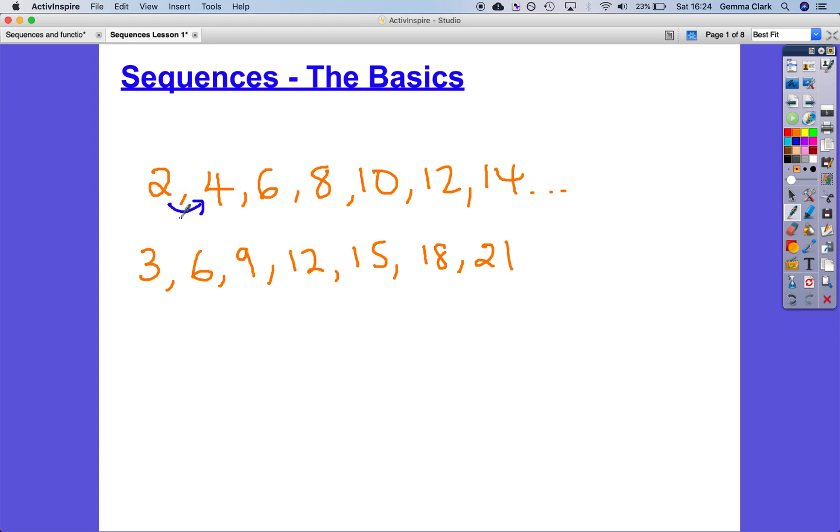Now what we do is we call each number in the sequence a term, and what we have as well is what's called the term to term rule. That is a rule that takes one term to the next, so in the two times table the term to term rule is going to be plus two and in the three times table it's going to of course be plus three.